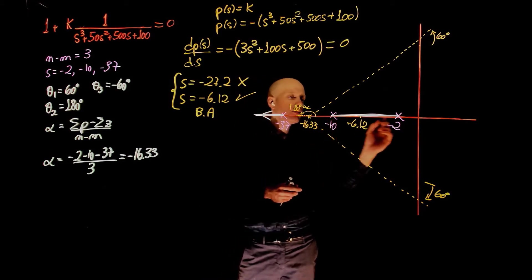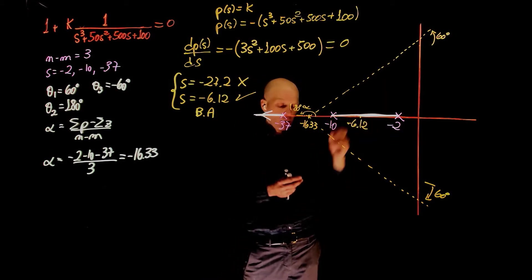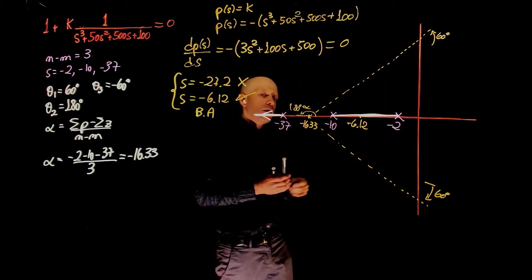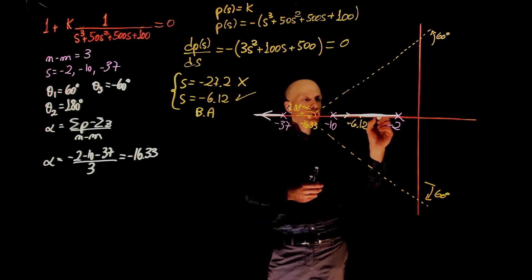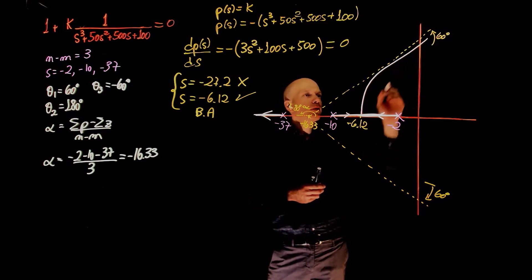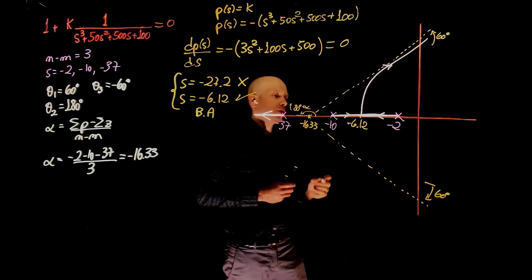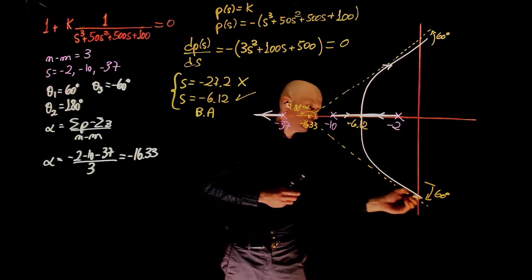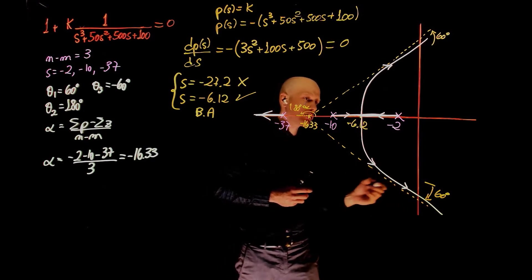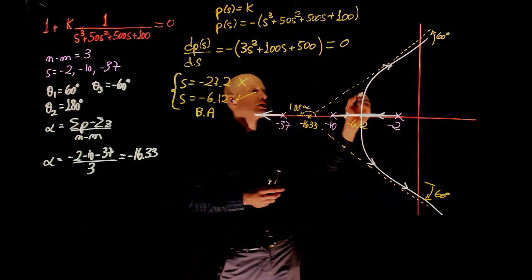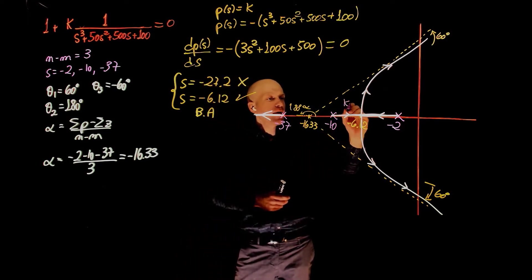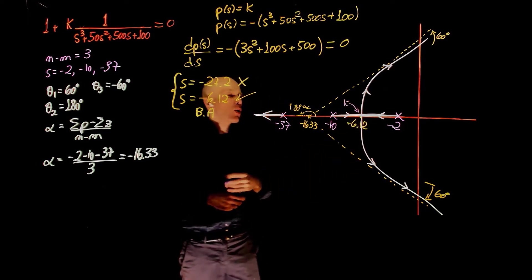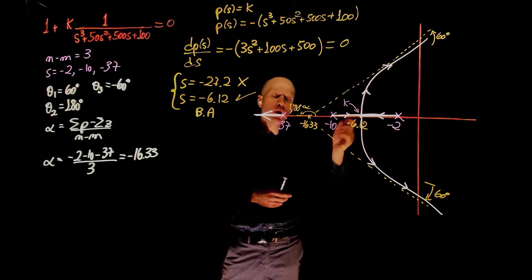This is the point where these two poles will come to meet before they break away from the real axis and become imaginary numbers. So these two poles will come to the breakaway point. One goes up and uses the 60 degree asymptote. The other one goes down and uses the negative 60 degree asymptote. Now, following that, we can also specify the value of k at the breakaway point. Why do we care about the value of k at that specific point? Well, that is the transition between an overdamped and underdamped system.